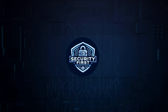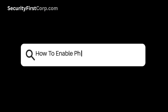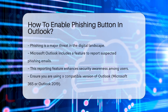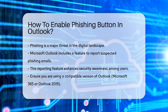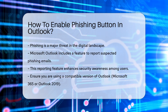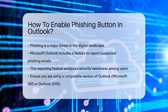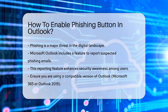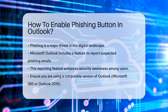Security First Corp. Safety through knowledge. How to enable the phishing button in Outlook? Phishing remains a significant threat in the digital landscape. Microsoft Outlook provides a feature to report suspected phishing emails. This feature is essential for enhancing security awareness and protecting users from potential scams. Ensure that you are using a version of Outlook that supports the phishing reporting feature — typically available in both Outlook for Microsoft 365 and Outlook 2019.